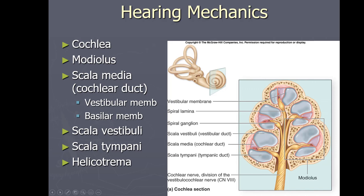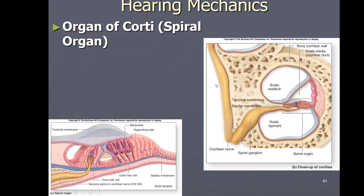Regardless of which way you look at a cross-section, scala tympani is always on the bottom, scala vestibuli always on top, and scala media always in the middle. Two membranes separate these regions: the vestibular membrane separates scala media from scala vestibuli, and the basilar membrane is on the bottom, separating scala media from scala tympani. Following the cochlea all the way to its tip, that point is called the helicotrema.